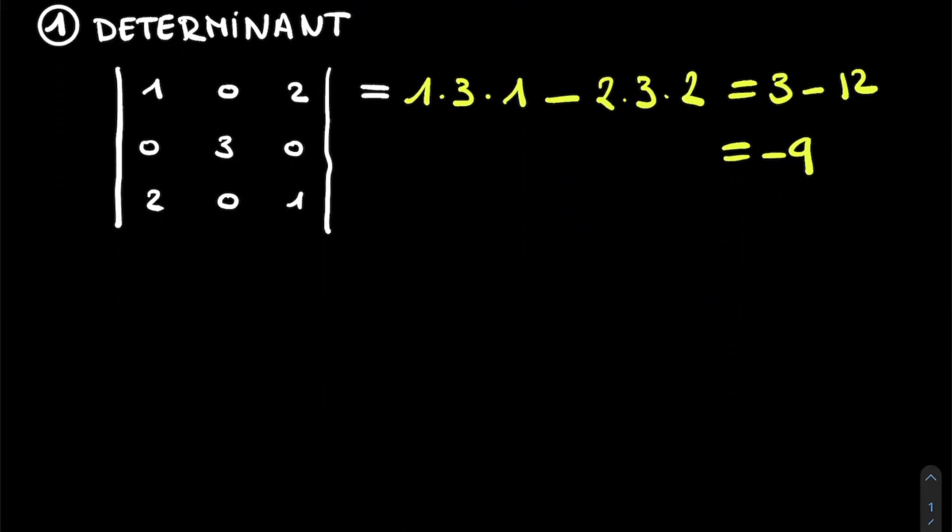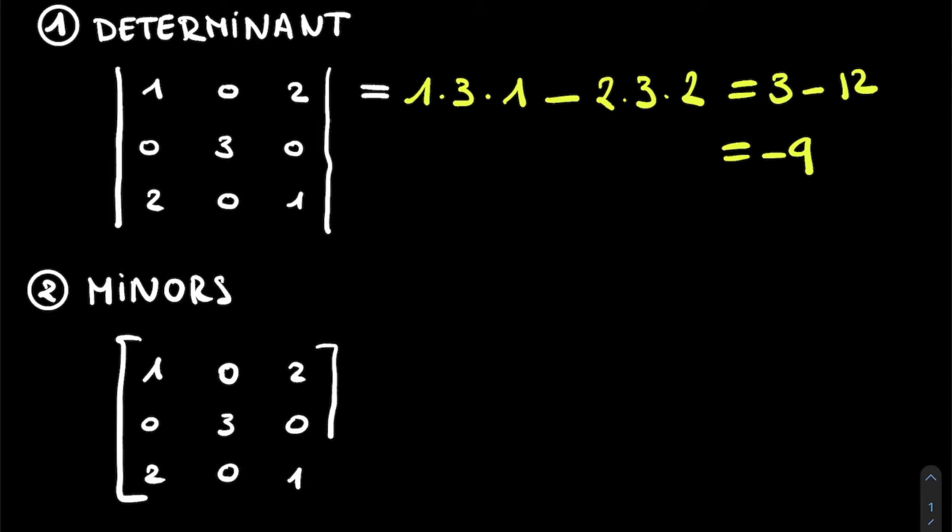So the first step in the inversion process is already tackled. Now, the second step, the step where oftentimes most errors are made, is to calculate the minors of this matrix. To do so, let's first rewrite our matrix. So we have 1, 0, 2, 0, 3, 0, 2, 0, 1. And now we have to calculate the minors of this matrix.